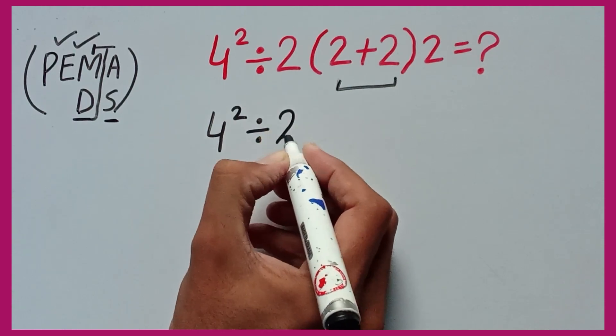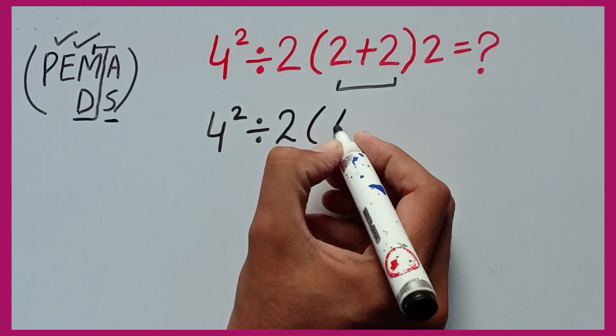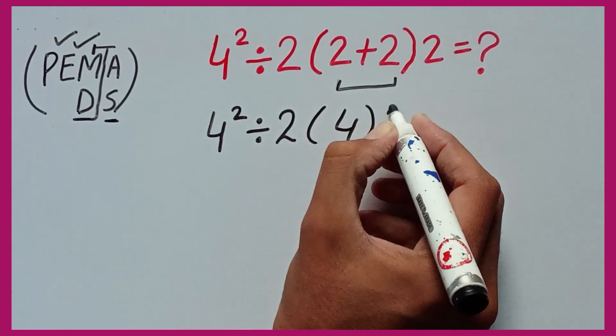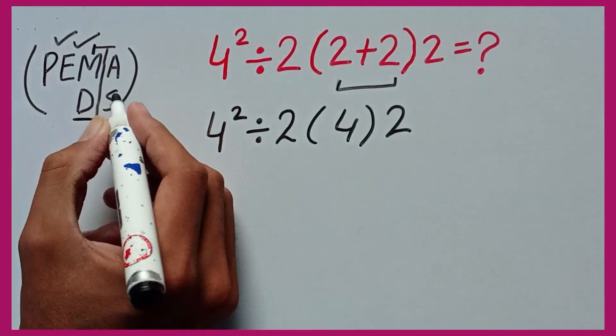Guys, 2 plus 2 equals 4 and again I multiply 2. Now according to PEMDAS rule